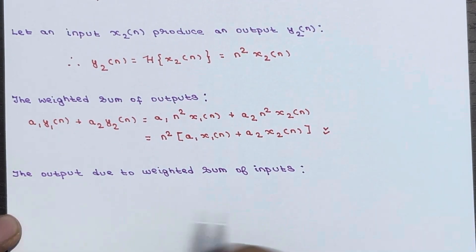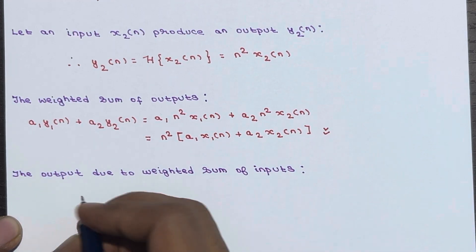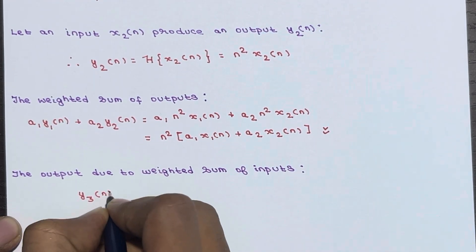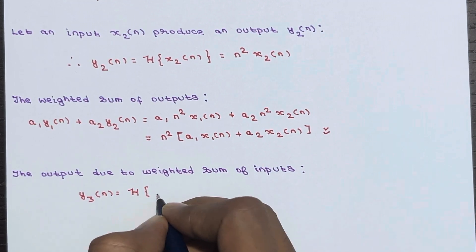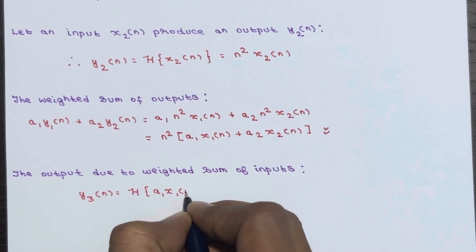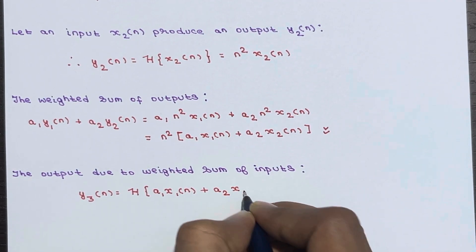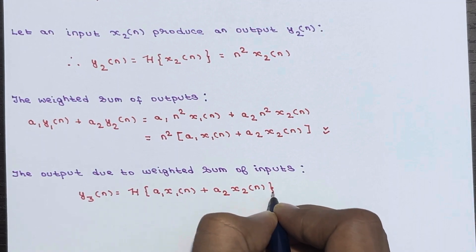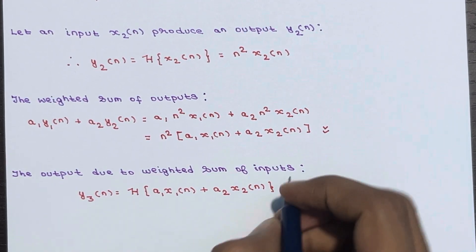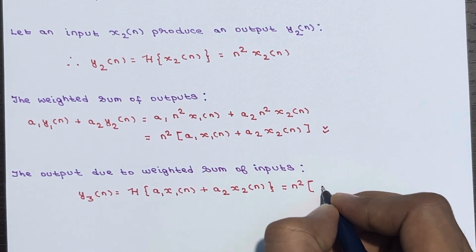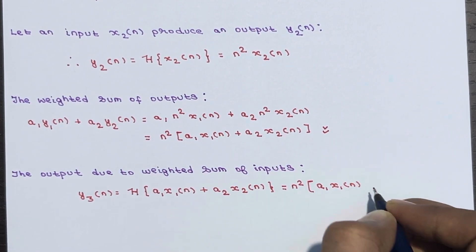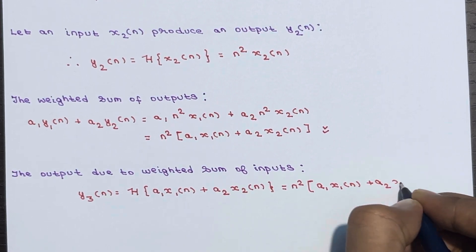Now we calculate the output due to the weighted sum of inputs — that is, when the combined input a1·x1(n) + a2·x2(n) is applied to the system. Assume y3(n) is the response. So y3(n) = transform of [a1·x1(n) + a2·x2(n)], which becomes n²·[a1·x1(n) + a2·x2(n)].